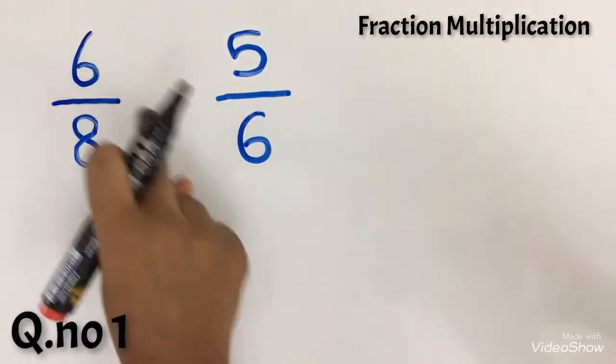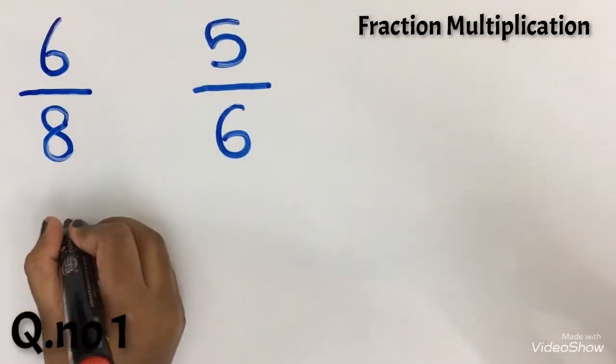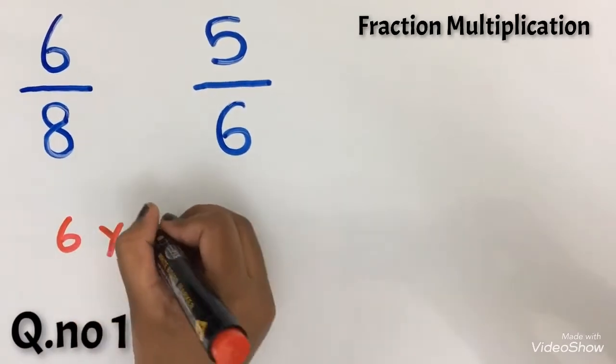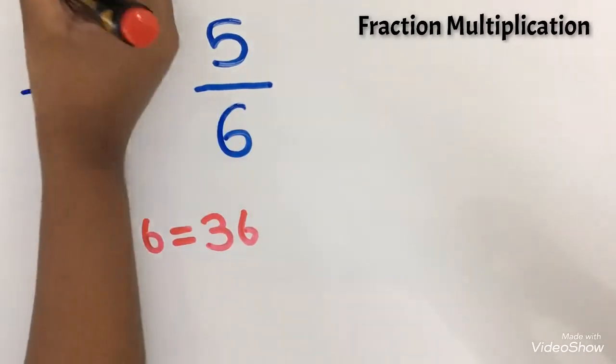First we have to do cross multiplication to multiply 6 into 6. 6 into 6 equals 36. I am going to write it over here.